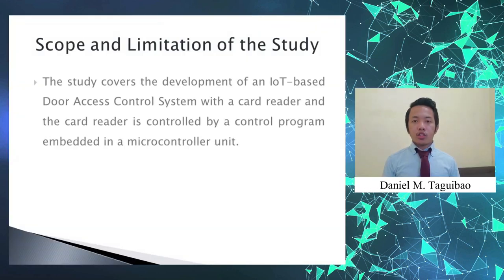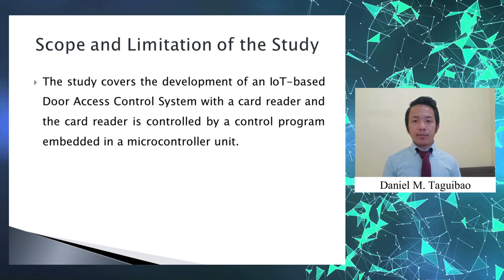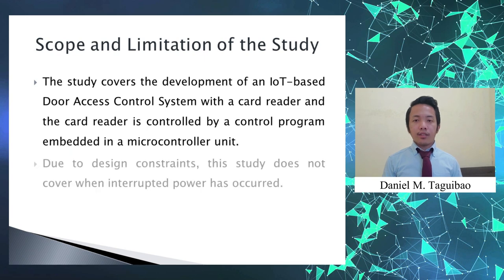Here are the scope and limitations of this study. The study covers the development of the door access control system. The system has a card reader and it is controlled by a control program embedded in a microcontroller unit. An RFID card is used to allow an authorized user to access a secure keyless door. All of the features were already discussed earlier on the objectives slide. Unfortunately, due to design constraints, the study does not cover scenarios when an interrupted power supply has occurred. This will only require uninterrupted power for efficient operation of the system.